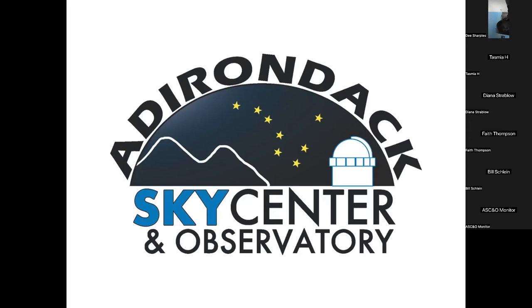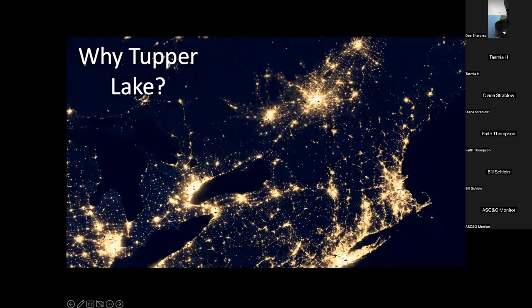The Adirondack Sky Center and Observatory is located in Tupper Lake, New York. We are located in the heart of the Adirondacks, right in the middle there in that dark circle. The benefit for that is that we have incredibly dark skies, which is a great benefit, one of the few places in the east that is as dark as we are.